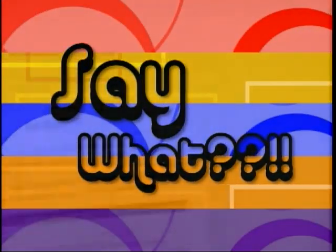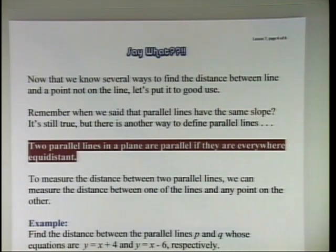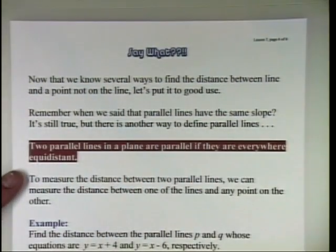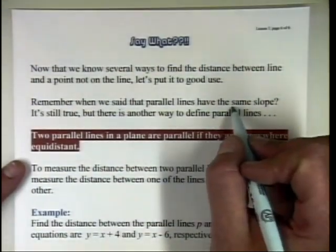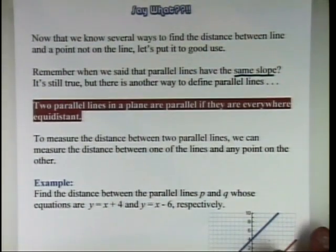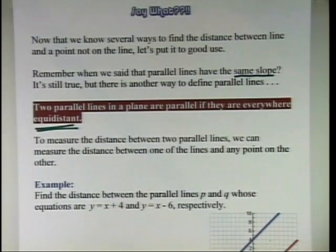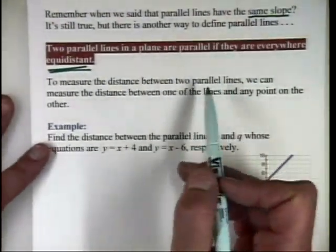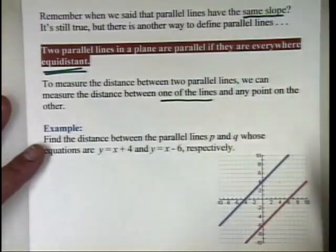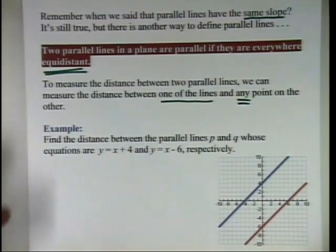Now it's time for the part of the program we call the save. Today we're going to look at finding distance not between a point and a line, but the distance between two lines. Remember what we said about parallel lines — they have the same slope. There's another way to define them: two lines in a plane are parallel if they are everywhere equidistant. It doesn't matter which two points we take on those parallel lines — the perpendicular distance between them is the same everywhere. To measure the distance between two parallel lines, we measure from one line to any point on the other.